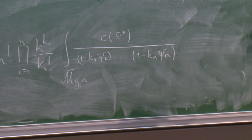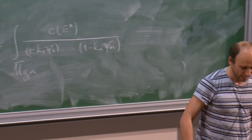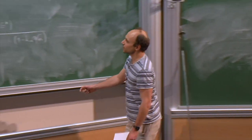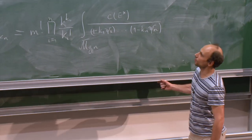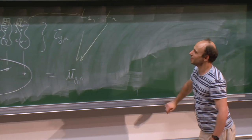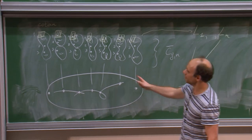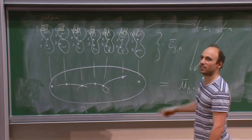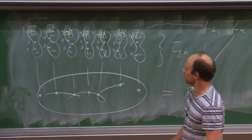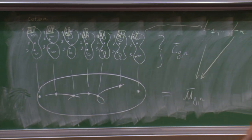I will briefly recall the meaning of all this so as not to take the whole hour. Here is a picture of the moduli space. This is the moduli space of genus G stable curves with n marked points. Points of this moduli space correspond to stable curves.